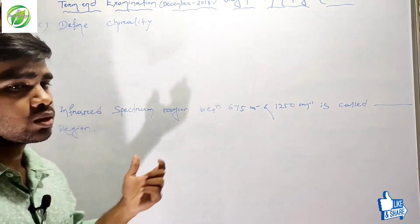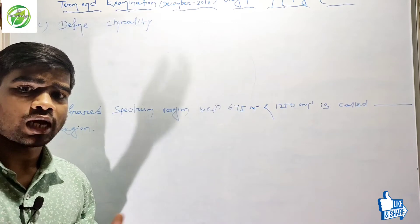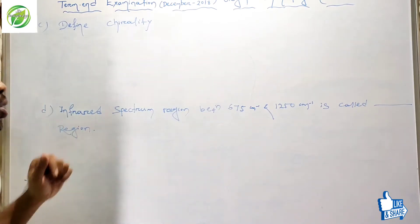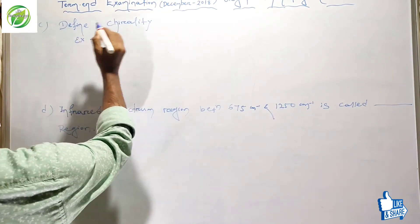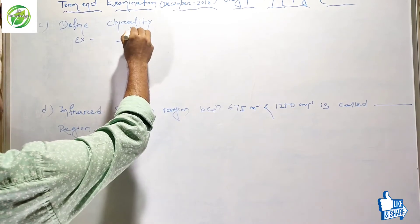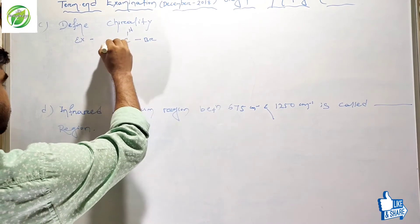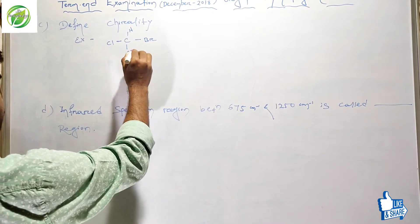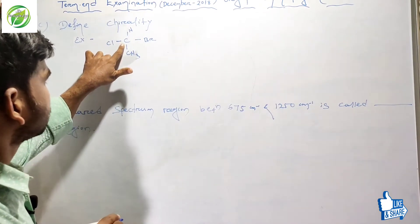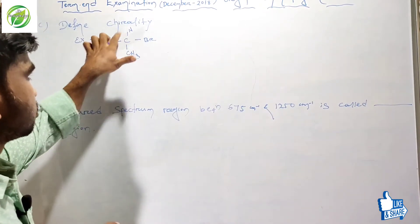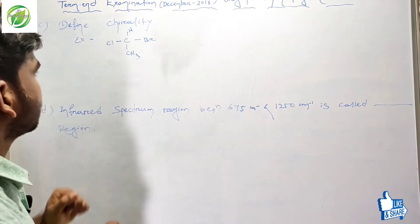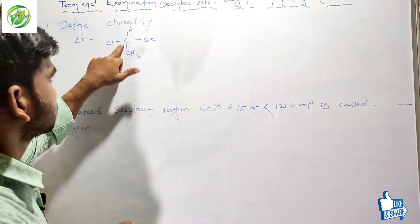We know that a carbon atom with 4 different groups attached is called a chiral carbon. For example, this carbon atom is bonded to 4 different groups — this carbon atom is called a chiral carbon atom. And this center is called a chiral center.